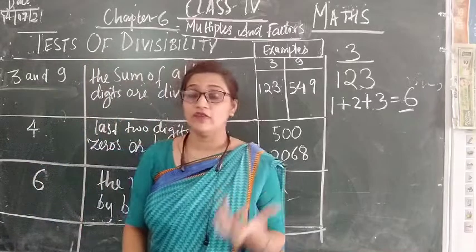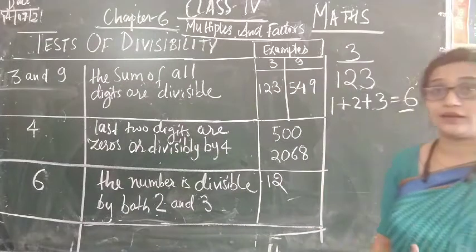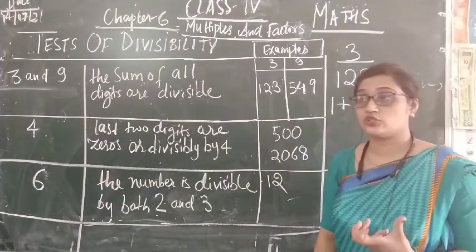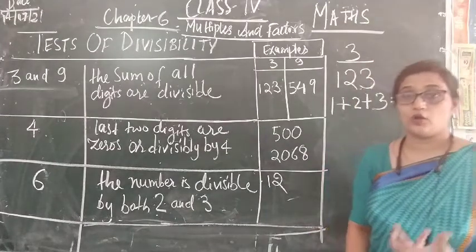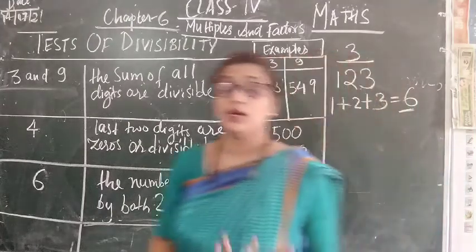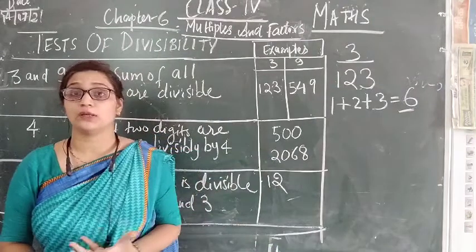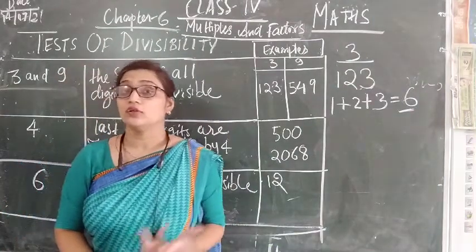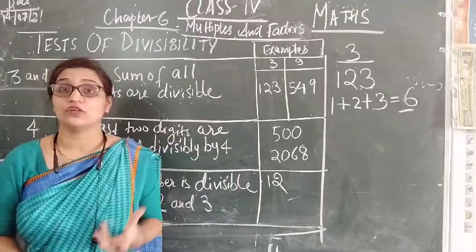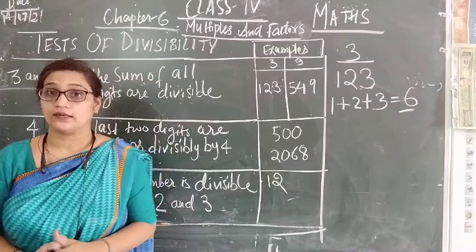Divisible means: if we divide that number by the given number, there will be no remainder left. If a remainder is left, that means that number is not divisible by the given number. So you should know the meaning of divisible — divisible means if we divide the given number with any number leaving no remainder, then the number is divisible. Otherwise, if a remainder is left, the given number is not divisible by that number.